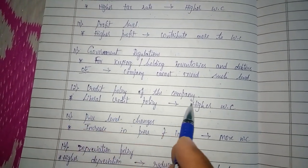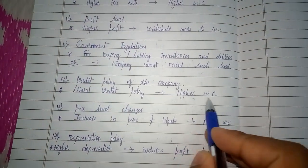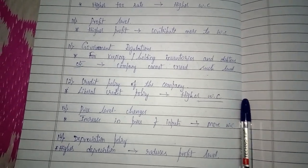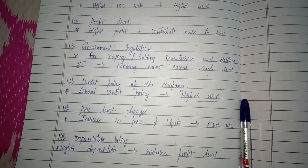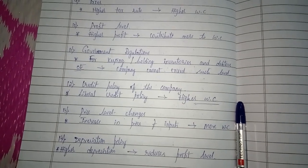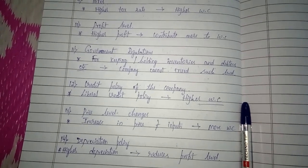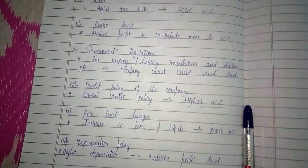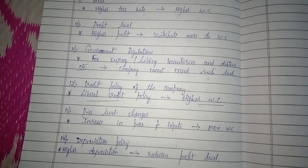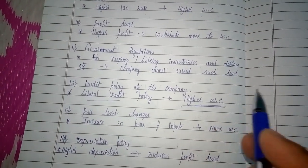The twelfth factor is credit policy. If a company follows a very liberal credit policy — selling products on credit but failing to recover the amount within the allotted time — it requires higher working capital. When the company cannot recover its working capital from debtors in time, it has to depend on external sources, which creates higher working capital demand.